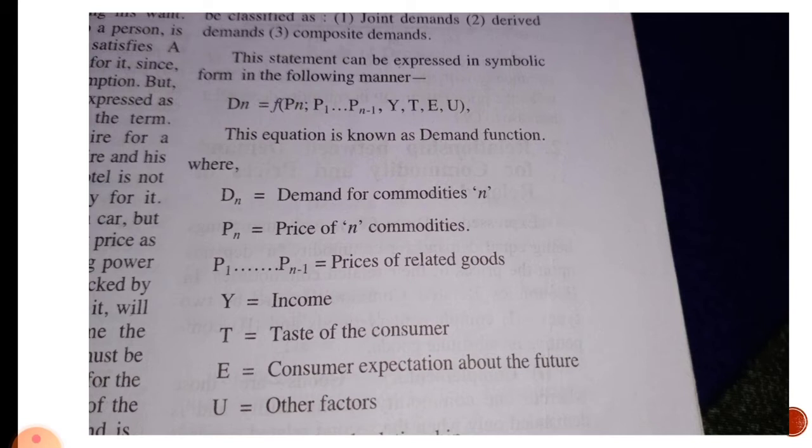The demand function is: Dn = f(Pn, P1 to Pn-1, Y, T, E, U). Here, Dn is demand for the commodity, Pn is the price of the commodity, P1 to Pn-1 are prices of related goods, Y is income, T is taste of the consumer, E is consumer's expectations about the future, and U represents other factors.